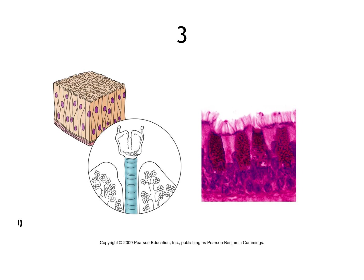This is pseudo-stratified epithelial tissue. It's epithelial because it's a lining with a free surface — here it lines the inside of your trachea. It's ciliated, and you can see the nuclei are at different levels: some high, some low, kind of like bowling pins. Some cells don't reach all the way to the top. This is pseudo-stratified ciliated epithelium.